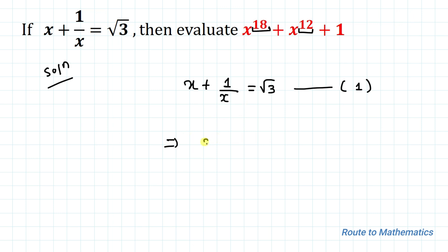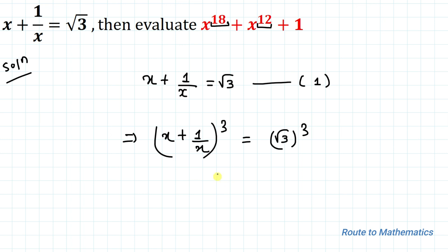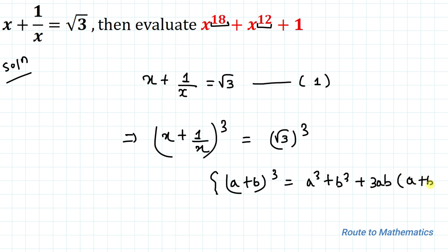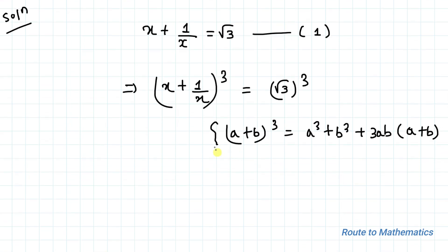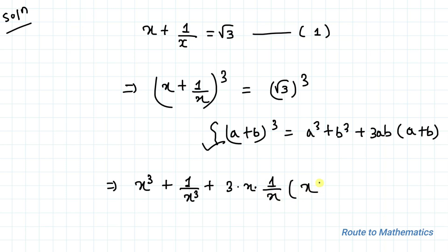So by cubing both the sides, we have (x plus 1 by x) whole cube equals to (root 3) cube. We know the algebraic identity: (a plus b) whole cube equals a cube plus b cube plus 3ab multiplied with (a plus b). By applying this identity, we can write: x cube plus 1 by x cube plus 3 multiplied with x multiplied with 1 by x multiplied with (x plus 1 by x) equals to root 3 cube, which is 3 root 3.